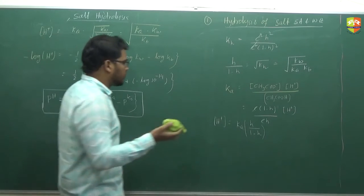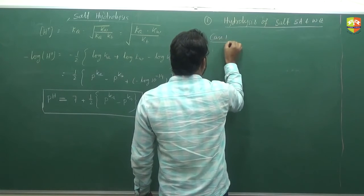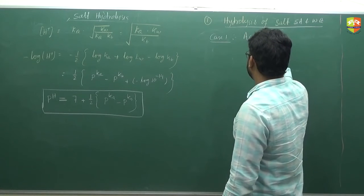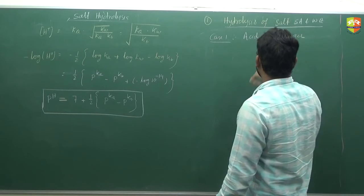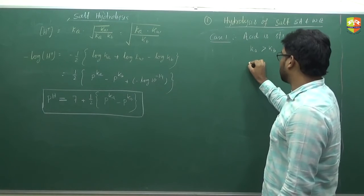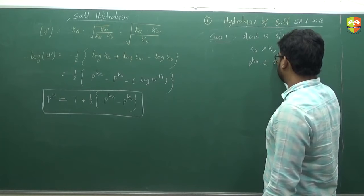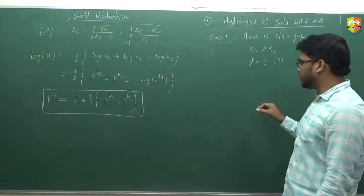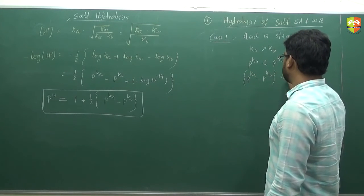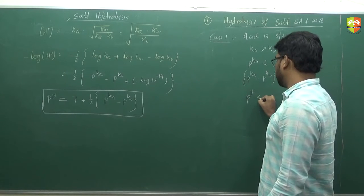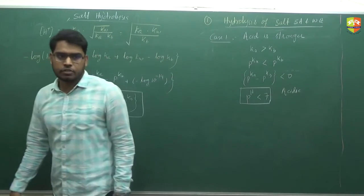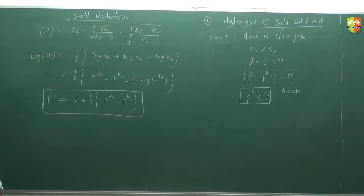There are three possibilities. Case 1: if the acid is stronger, it means Ka is greater than Kb, so pKa is less than pKb, meaning pKa minus pKb is less than 0. Therefore pH is less than 7 — the solution is acidic. This is true: if acid is stronger, it dominates the base and the solution will have acidic behavior.